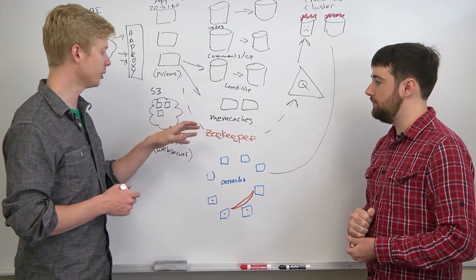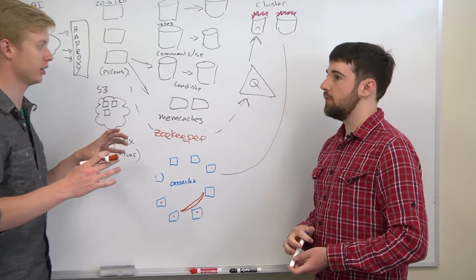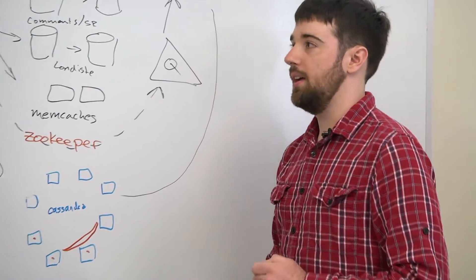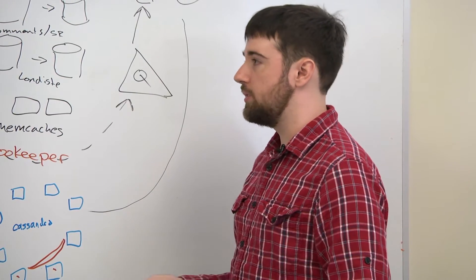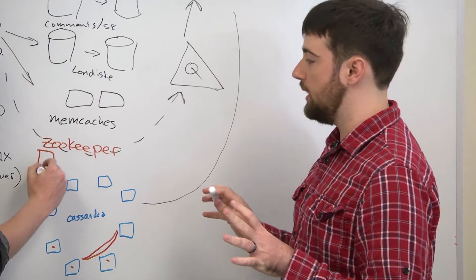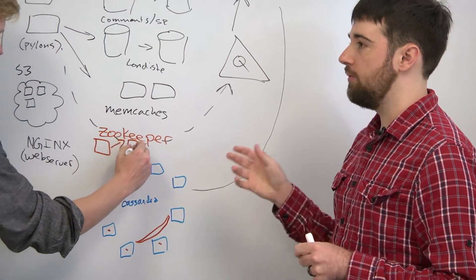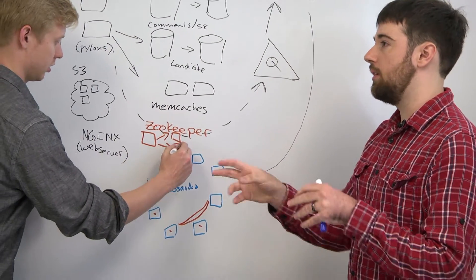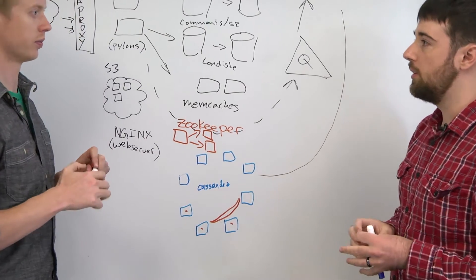And how many, is there one Zookeeper box, is there a bunch of Zookeeper boxes? So they form an ensemble, and the way it works there's a master, and the others are sort of read replicants. And if the master fails, it'll automatically elect a new leader among the ensemble.